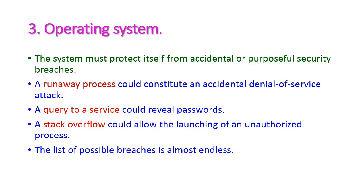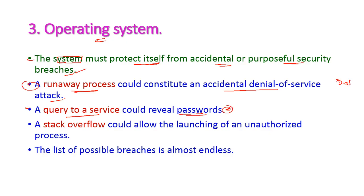The third level is the operating system level. The computer system must protect itself from accidental or purposeful security breaches. A runaway process could constitute an accidental denial-of-service (DOS) attack, a query to a service could reveal passwords, and a stack overflow could allow launching an unauthorized process. The list of possible breaches is almost endless.